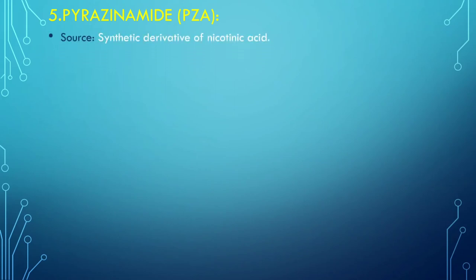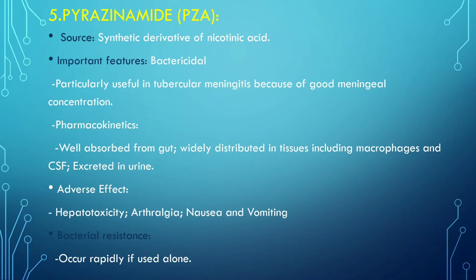The next drug used in tuberculosis has the source as a synthetic derivative of nicotinic acid. It is bactericidal and particularly useful in tubercular meningitis. Pharmacokinetics: it is well absorbed from the gut, widely distributed in tissues including macrophages and the cerebrospinal fluid. Adverse effects include hepatotoxicity, nausea, and vomiting. Bacterial resistance occurs rapidly if used alone, so it is mostly used in combination with other drugs.